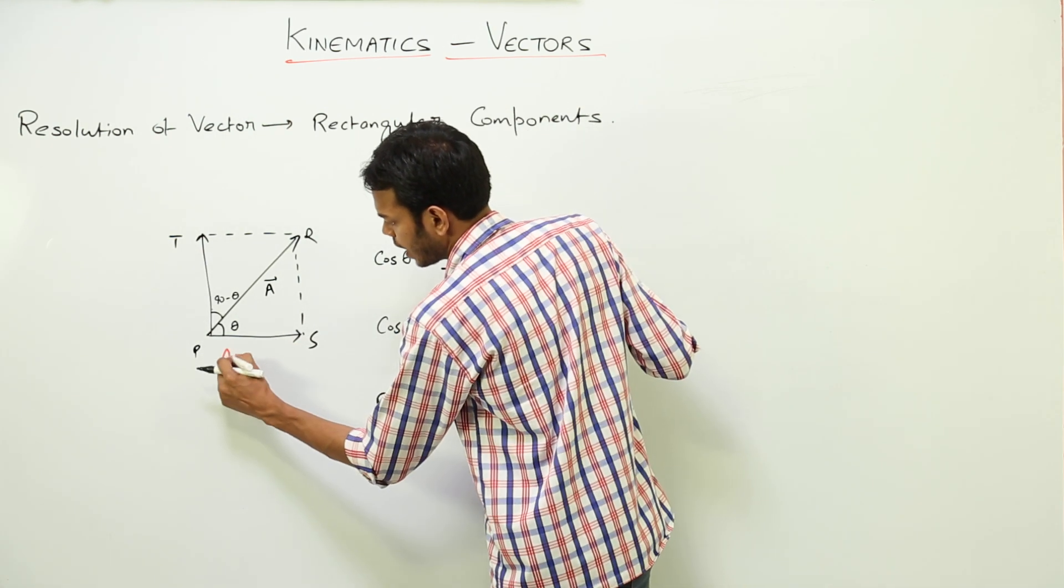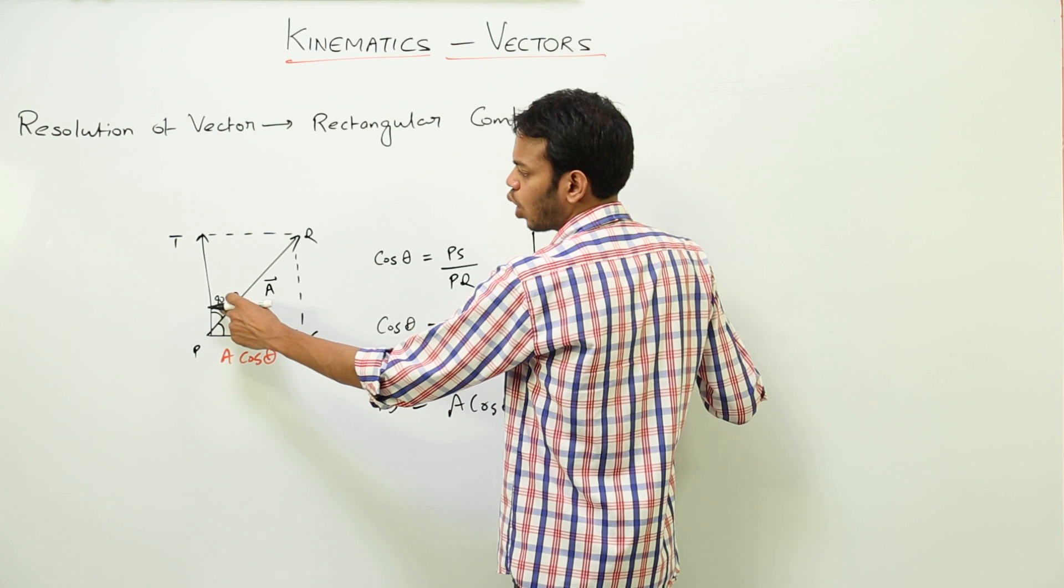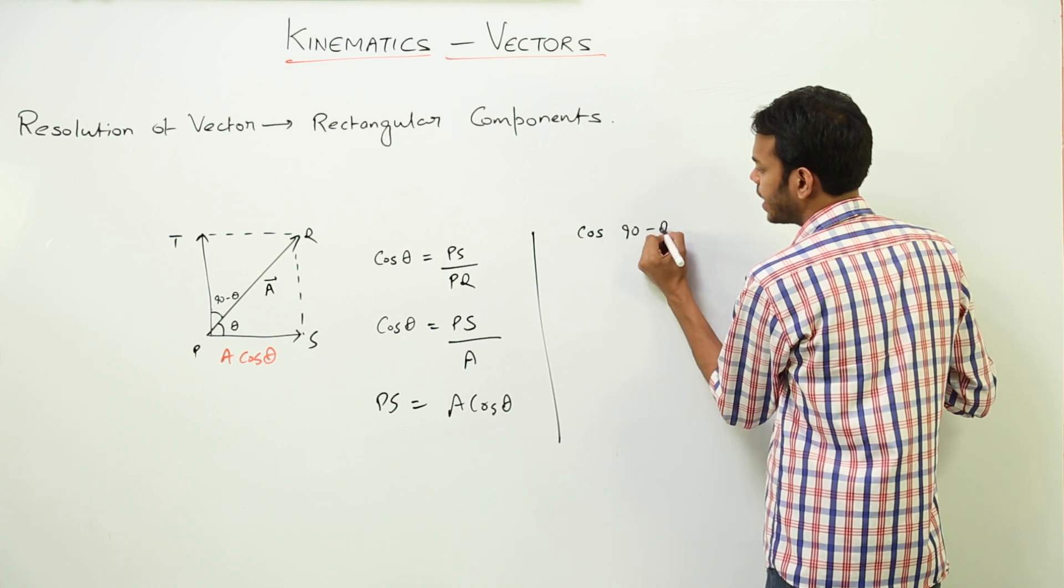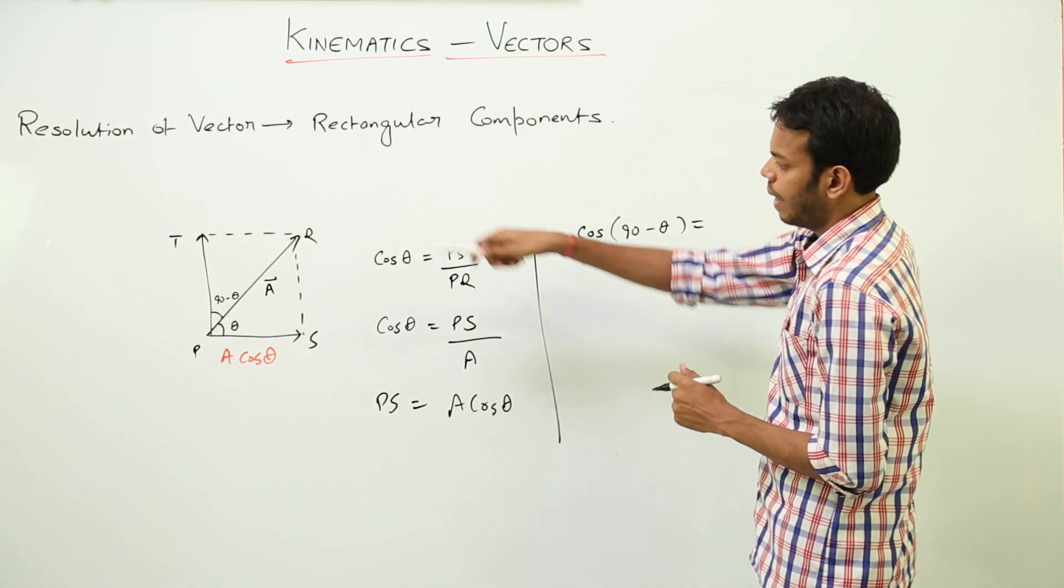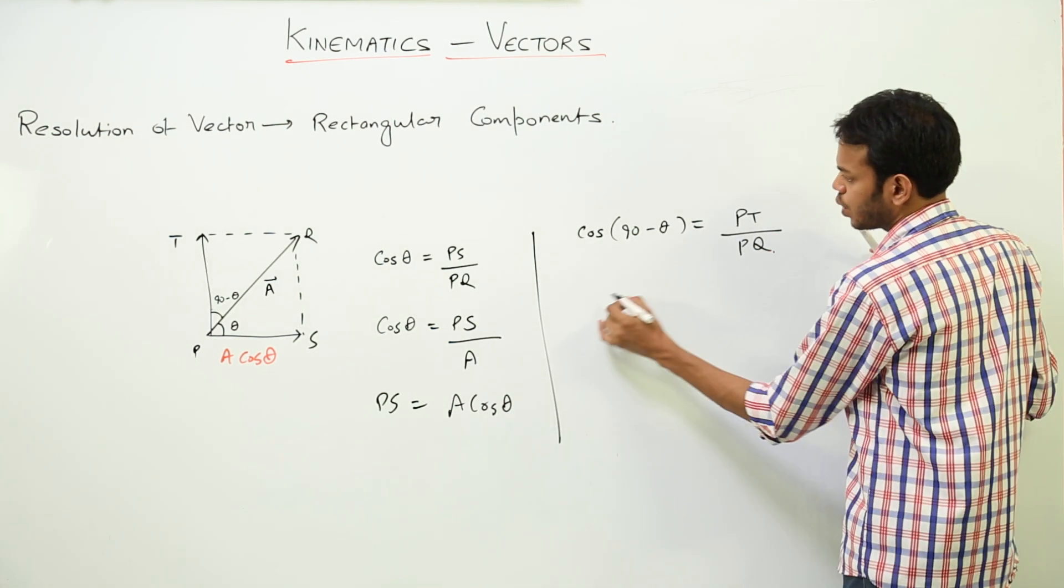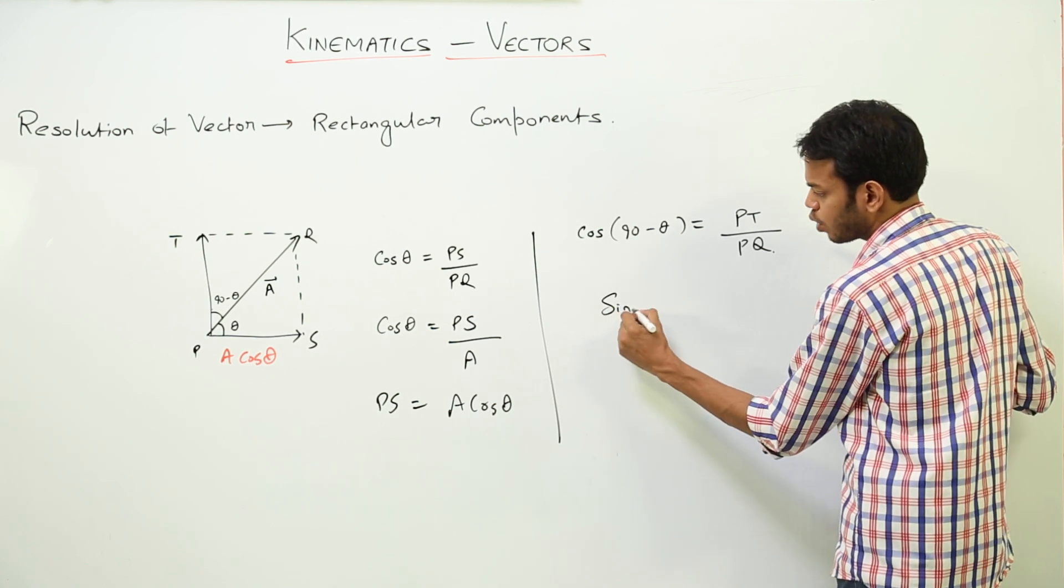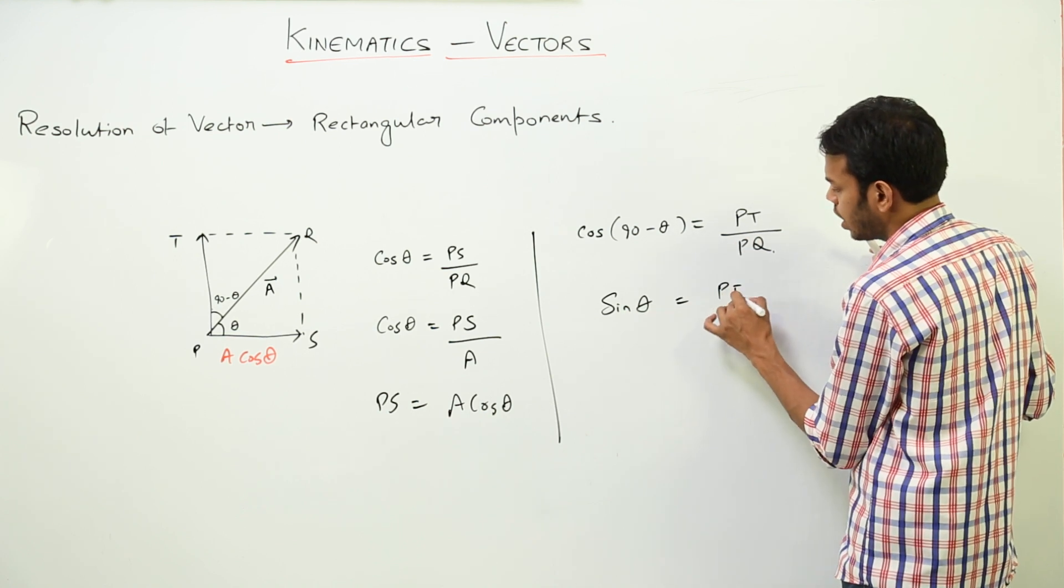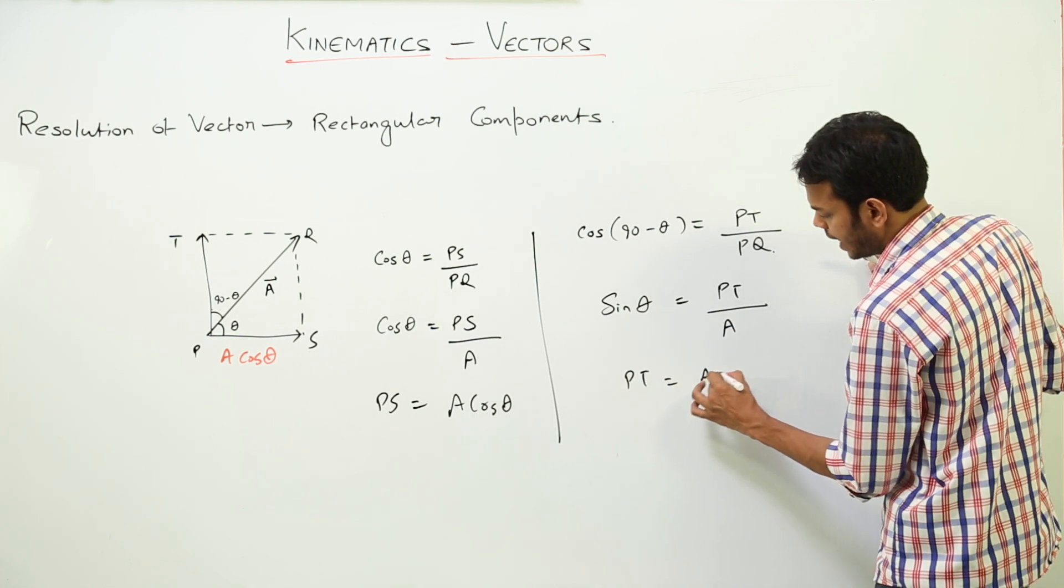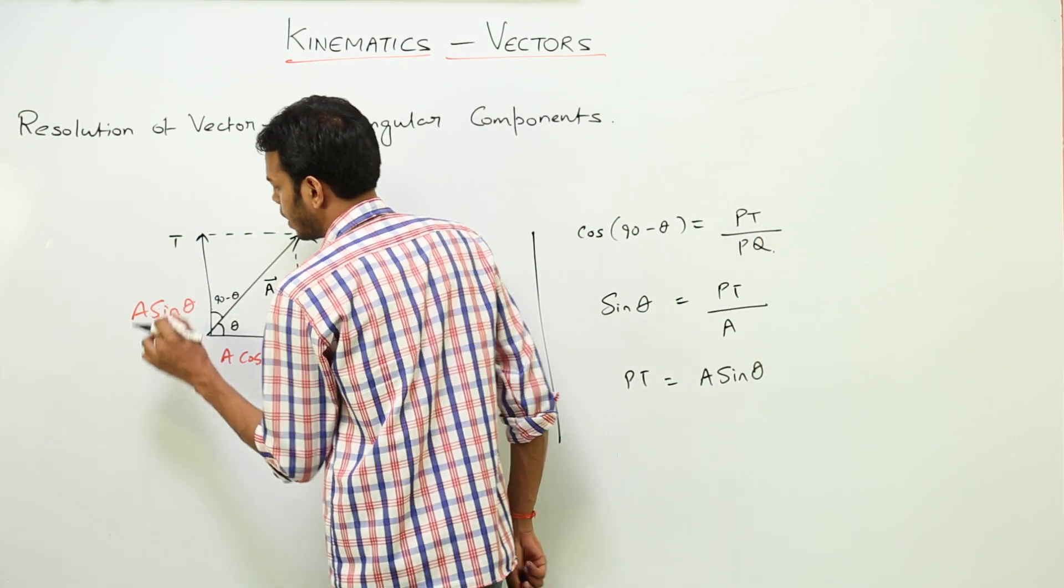Similarly, if I again do cos with this base and hypotenuse, what do I get? Cos 90 minus theta is base, which is PT, upon hypotenuse, which is PQ. So cos 90 minus theta, according to trigonometric identity, is sin theta. So sin theta equals PT, which we are finding out, upon PQ. PQ is the magnitude of vector A, so PT becomes A sin theta. So this vector is now A sin theta.